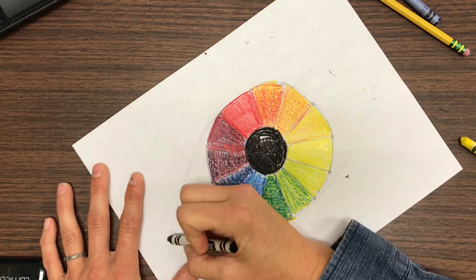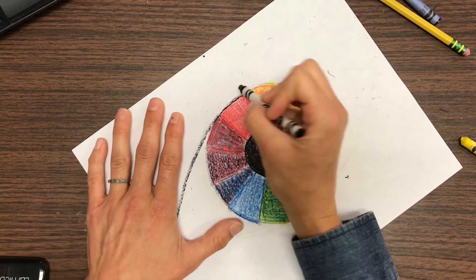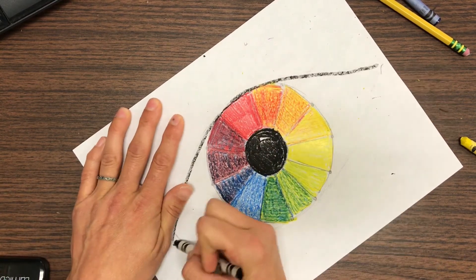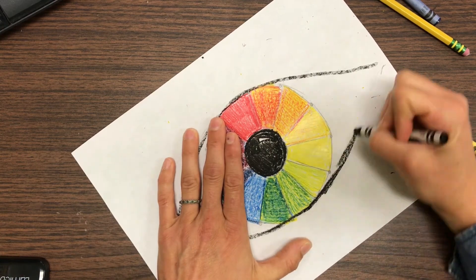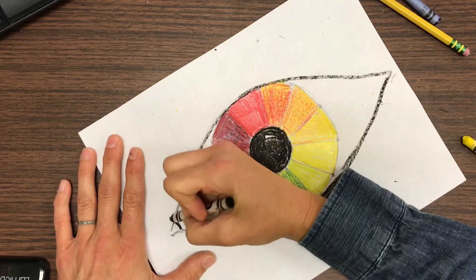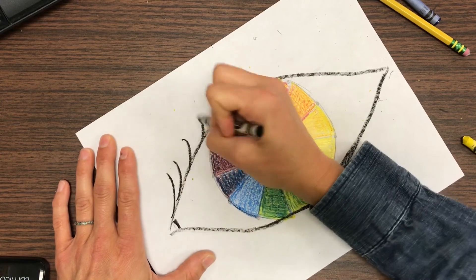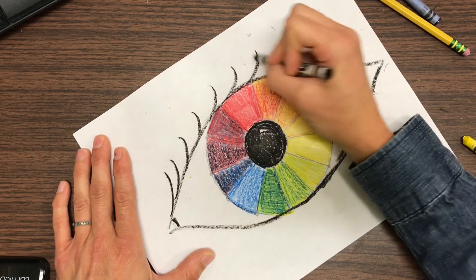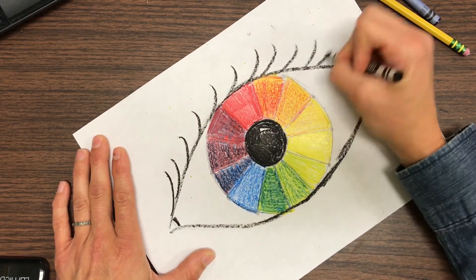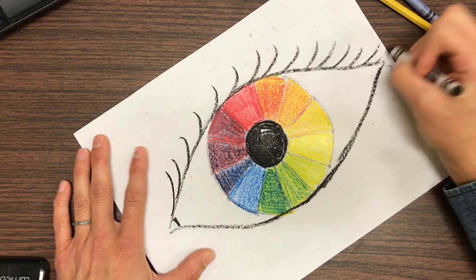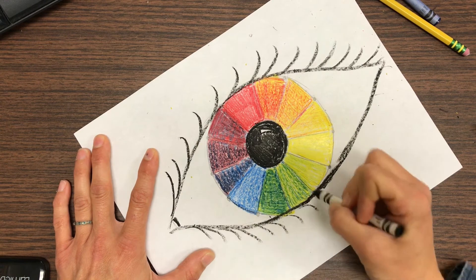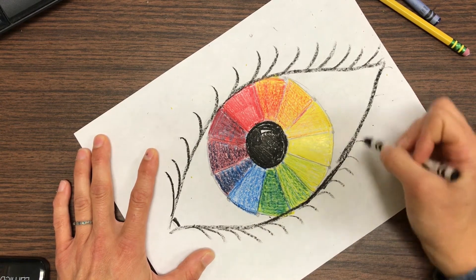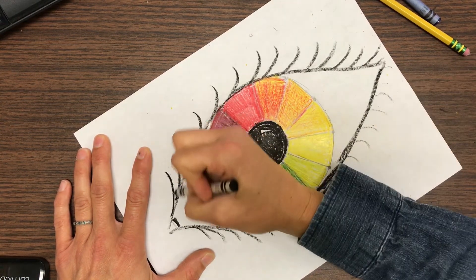Then I'm just going to trace the eye with the black crayon. And then I can add those eyelashes. I like to start at the eye and kind of curve out. And then I curve the opposite direction on the bottom. And usually your eyelashes on the bottom are shorter.